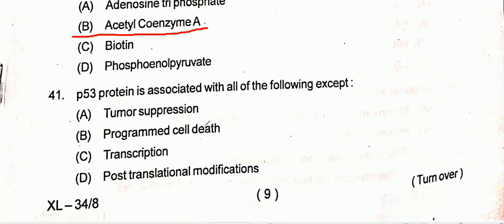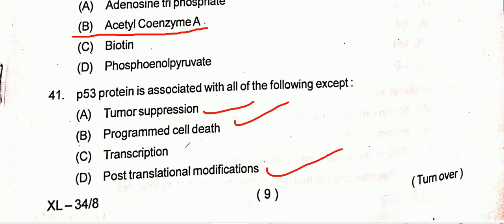Question number 41: Regarding P53 protein — P53 protein is associated with tumor suppression, programmed cell death, and post-translational modification, but not with transcription. Option C is the correct one.